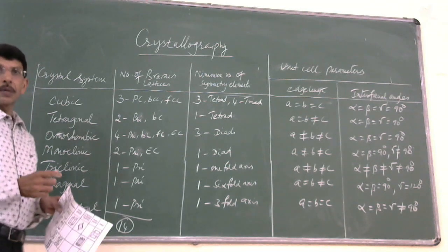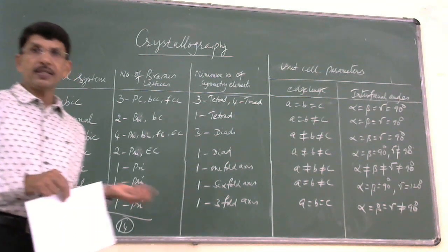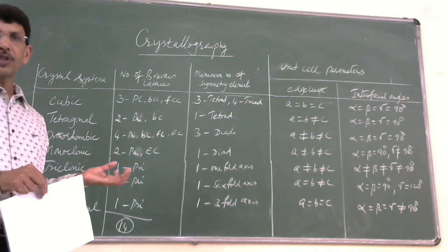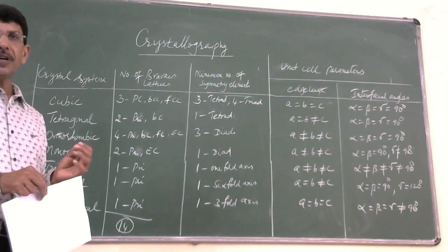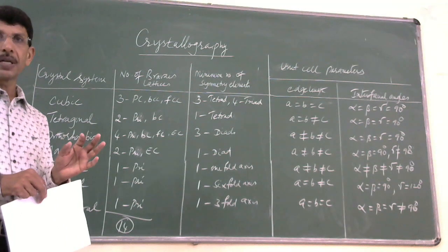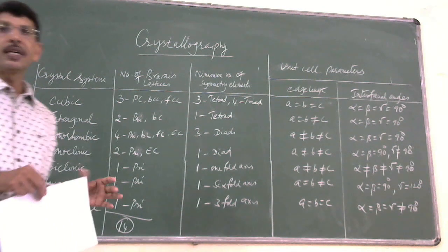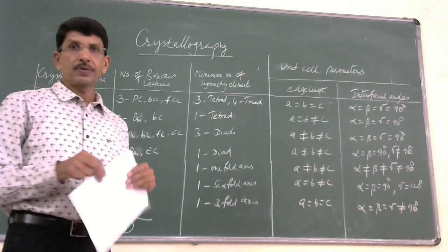So Bravais concluded that these 14 types of arrangements are the only ones possible under the 7 types of crystal systems. We will continue in the next session.